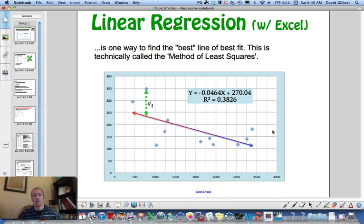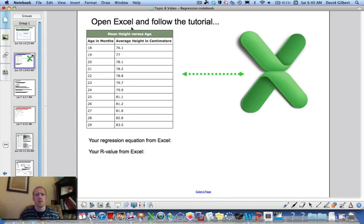Alright, so now we're doing linear regression. Basically it's when you take a scatter plot and you get the best line of best fit. So let's see how we do this.